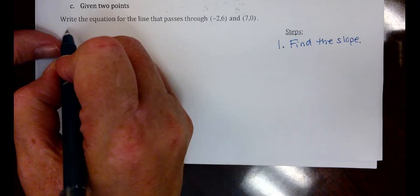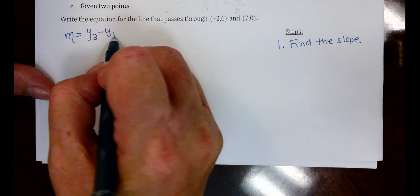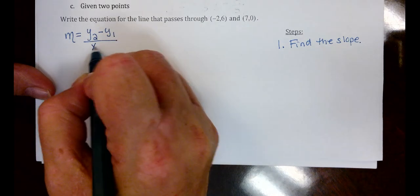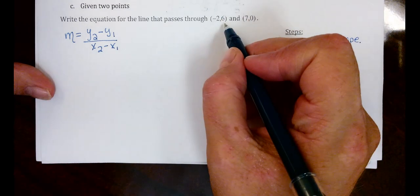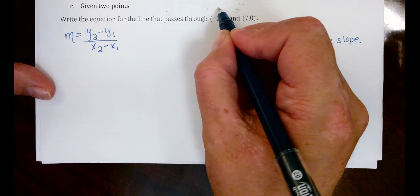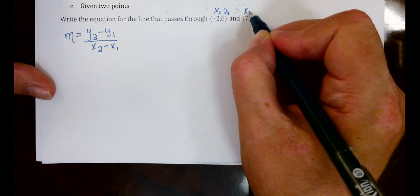So this is going to be M equals Y2 minus Y1 over X2 minus X1. In order to use this, we must label these two points we're given. So we're going to say X1, Y1, X2, Y2.